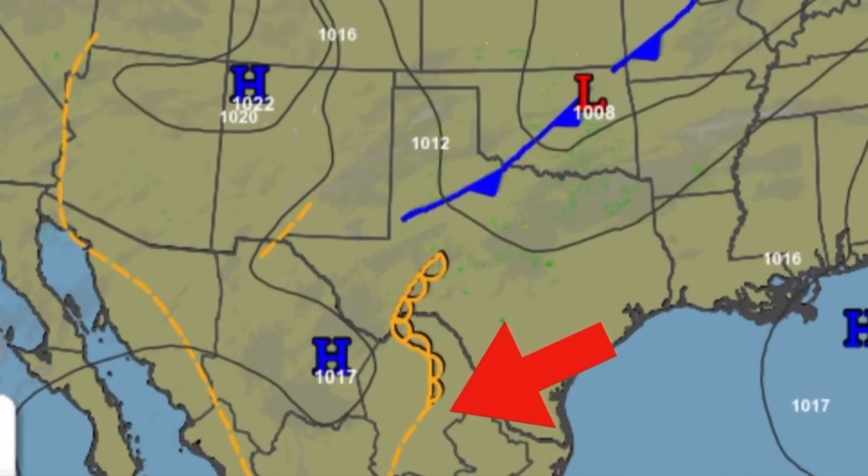Another boundary type is the dry line. This is often found in the south-central U.S. and is one of the more deceptive symbols on the chart. It doesn't look as significant as a cold or a warm front, but it separates moist air from dry air, which can be the perfect recipe for explosive thunderstorms. If your flight takes you in the vicinity of this line, you should be on the lookout for convective activity.